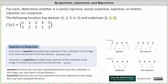First, notice all the elements in the codomain do appear in the range, and therefore the function is surjective, since surjective functions do not miss elements from the codomain in the range but may have repeated elements. Notice in this case, the elements 1 and 2 from the codomain are repeated, which is allowed for a surjective function.